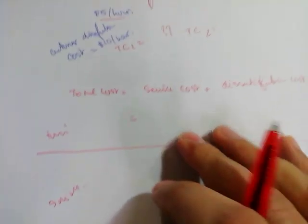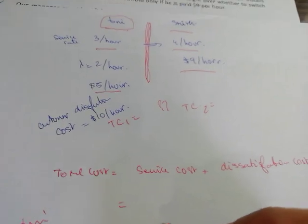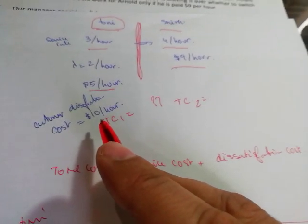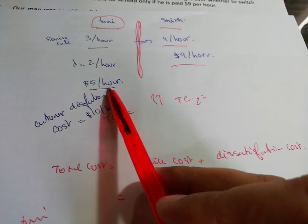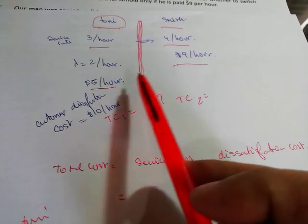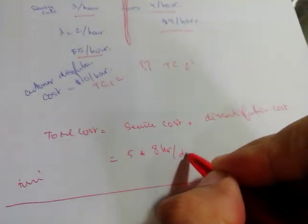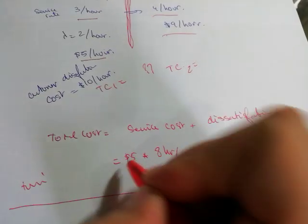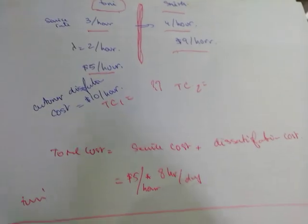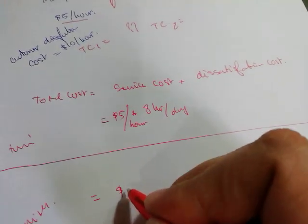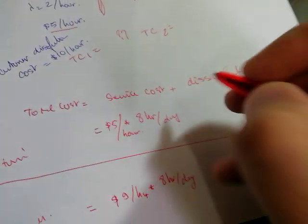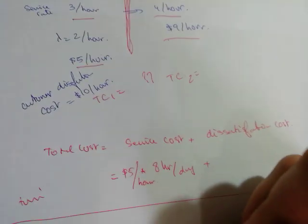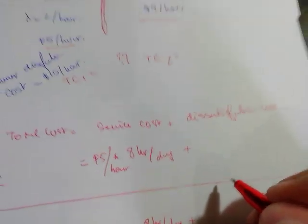The service cost for Tony is five dollars per hour as a wage. For Smith, it's nine dollars per hour. So we have eight hours per day times five dollars per hour for Tony, and for Smith it's nine dollars per hour times eight hours per day.